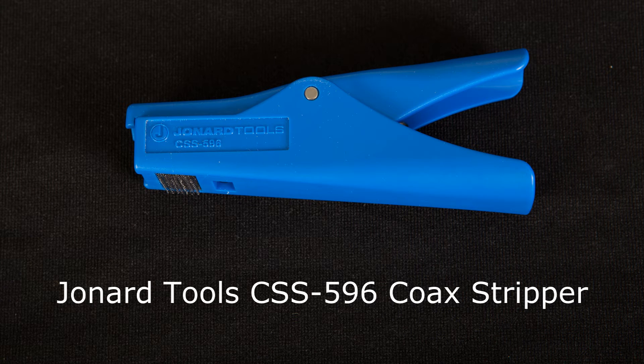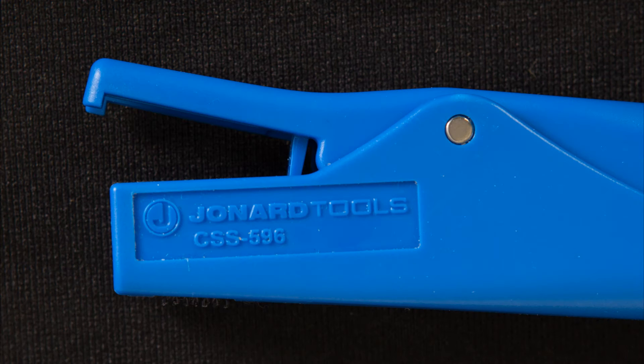The CSS-596 is a coaxial cable stripper specifically designed to strip a stub end of a coax cable in a wall outlet.